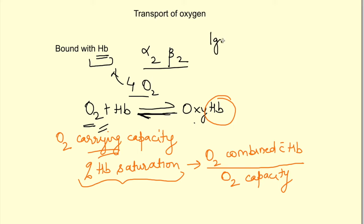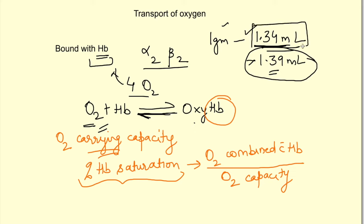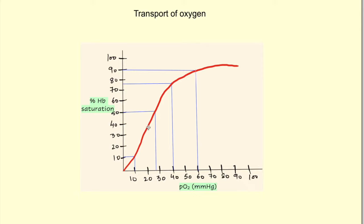One gram of hemoglobin can carry 1.34 ml of oxygen. Some books give 1.39 ml — both are correct in different contexts. The value of 1.39 ml applies theoretically when all hemoglobin is adult hemoglobin. Physiologically, we use 1.34 ml because a correction is needed for forms of hemoglobin that cannot combine with oxygen, such as methemoglobin.